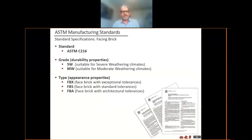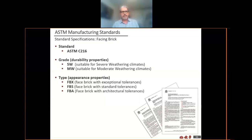ASTM C216 is the ASTM equivalent to A82-14. You will see some differences in that they still refer to severe weather, which is the equivalent to our exterior grade, and moderate weather, which would be more akin to our interior grade. They have the same X, S, and A, but in their case all three are preceded by FB for facing brick.